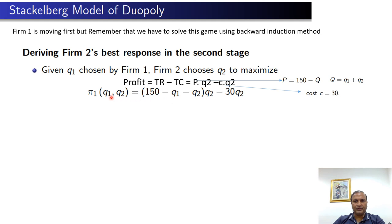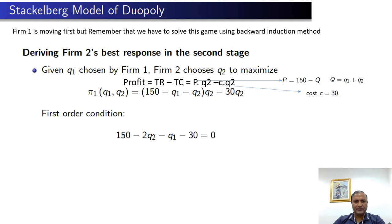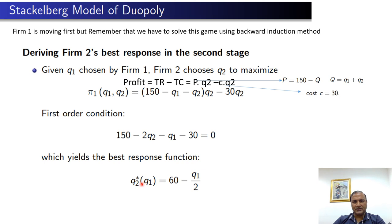Now we maximize firm 2's profit function by applying the first order condition — taking the derivative with respect to q2 and setting it equal to zero. Taking the derivative gives: 150 − 2q2 − q1 − 30 = 0. Solving for q2, we get firm 2's best response: q2 = 60 − q1/2. This is the best quantity for firm 2 given the quantity of firm 1.